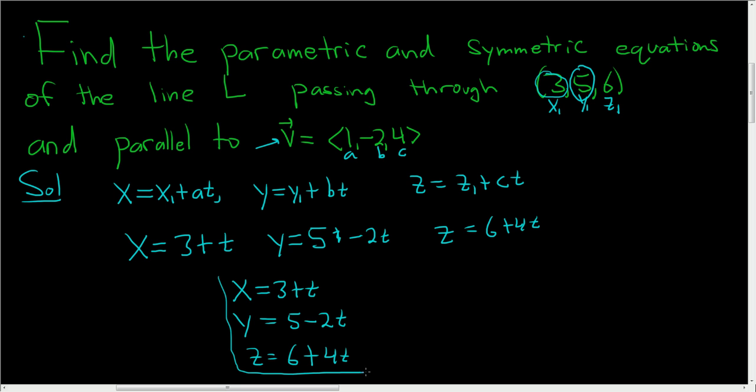Now we have to find the symmetric equations. We can only find these symmetric equations when all of these guys are non-zero, and they are, so we're able to find these. You could memorize the formula, but let me try to explain how to come up with them.